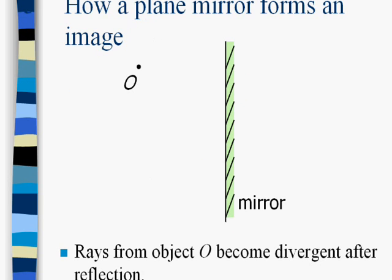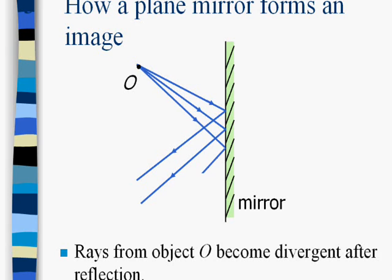How a plane mirror forms an image. We have a point object at O. A point object is that object which has three dimensions very, very diminished. From O we have these three rays which are getting reflected from the mirror. These rays are not only reflected but are divergent too.